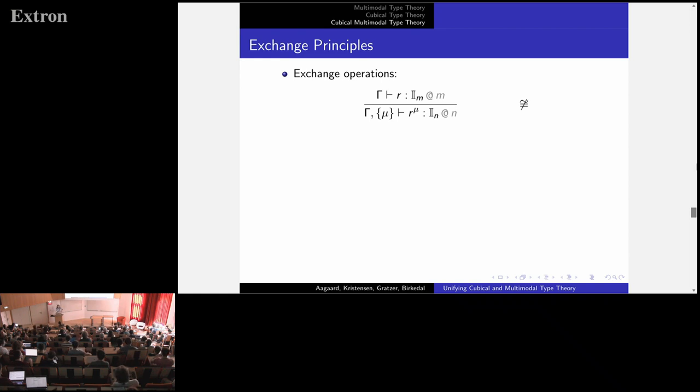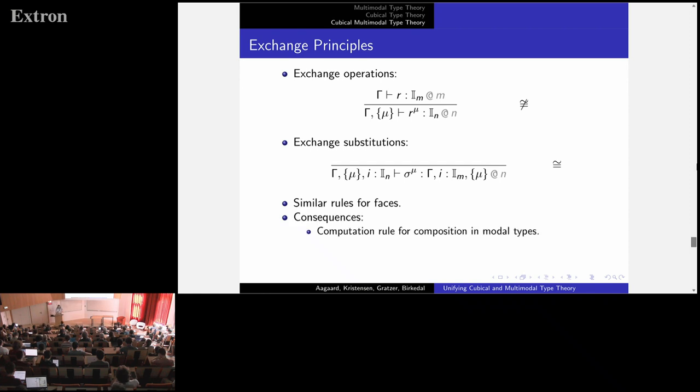The way we implement this principle with the rules is through exchange principles. First, we have exchange operations. They tell us that if we have an interval term in some context, and we unlock the context, we can bring the interval term with us. This crucially is not, there's no inverse to this operation. It turns out that adding an inverse, whilst it seems to fit with the orthogonality principle, invalidates a lot of models that we would like to be models. So this is only a one-way operation. We also have the same substitutions. Since these are, in fact, inverses, this one tells us that we can exchange locks and interval variables. And we have similar rules for phases and phase restrictions.